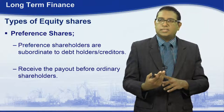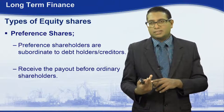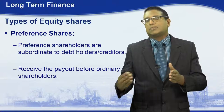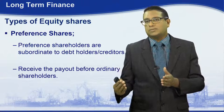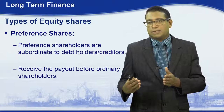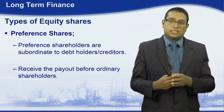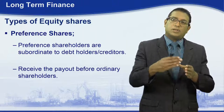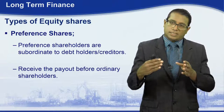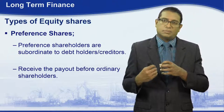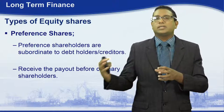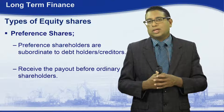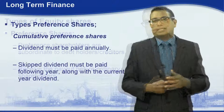In liquidation, the debt holders and creditors will get paid first. Then the preference shareholders will get paid. It is important to understand that only after the preference holders receive their share of the company will the ordinary shareholders receive their payouts.